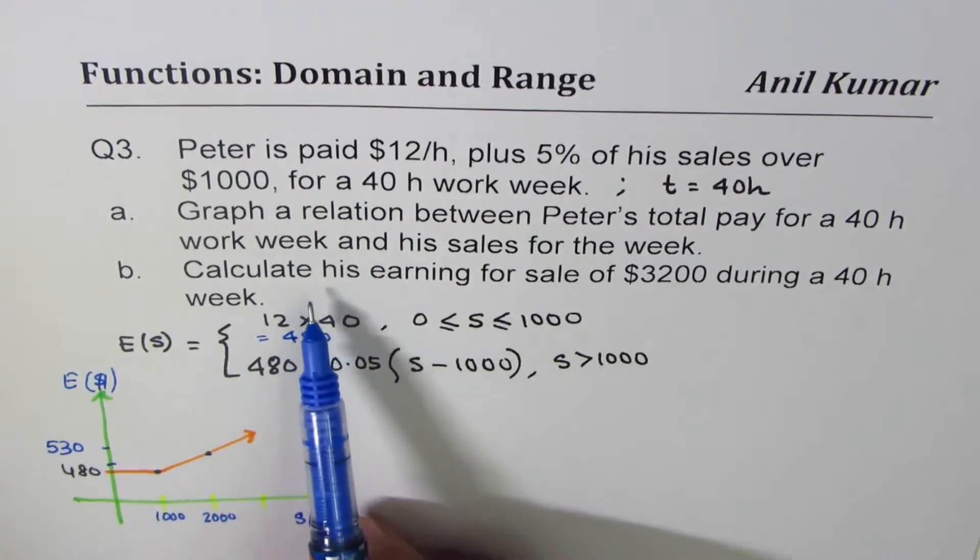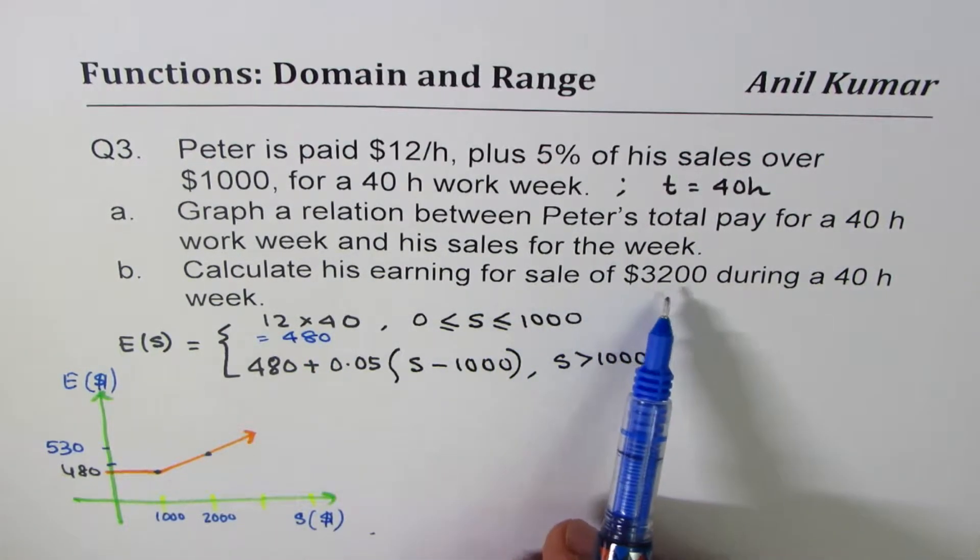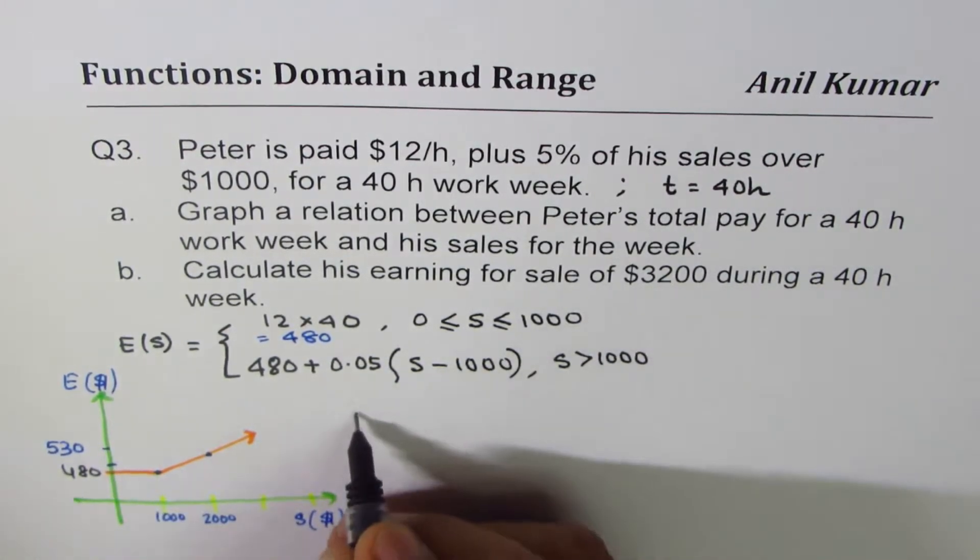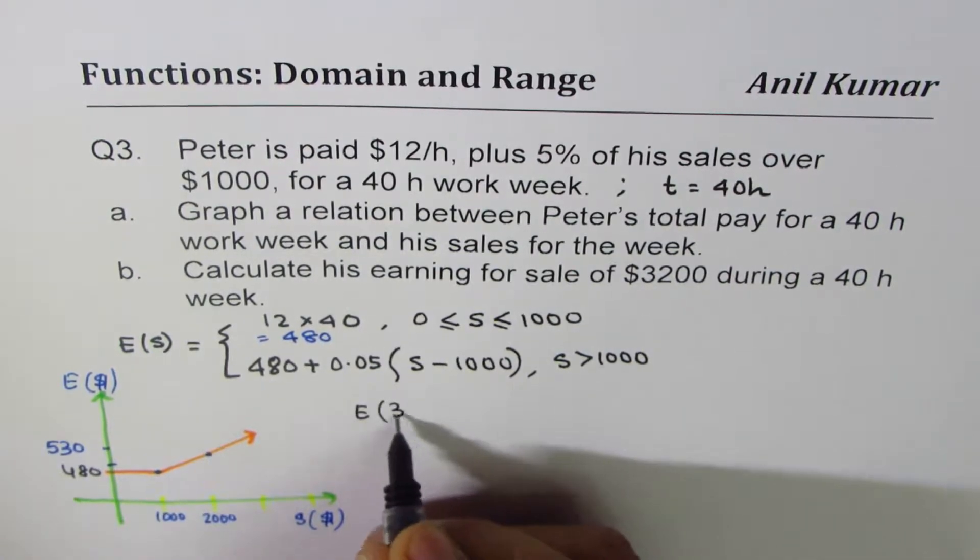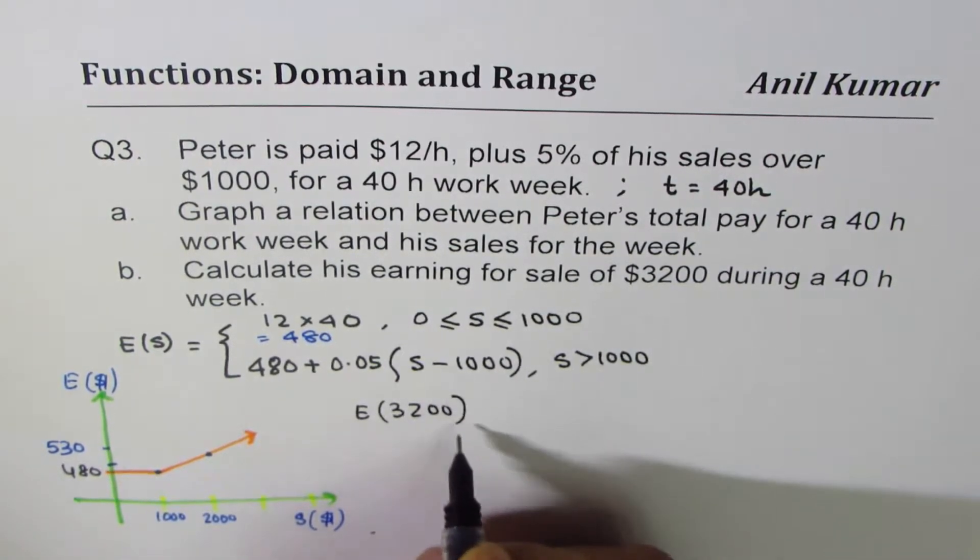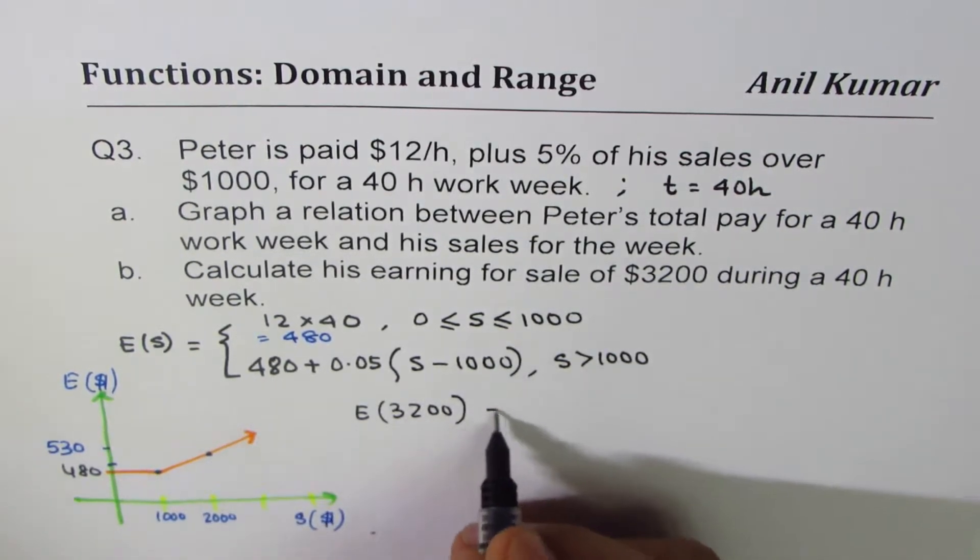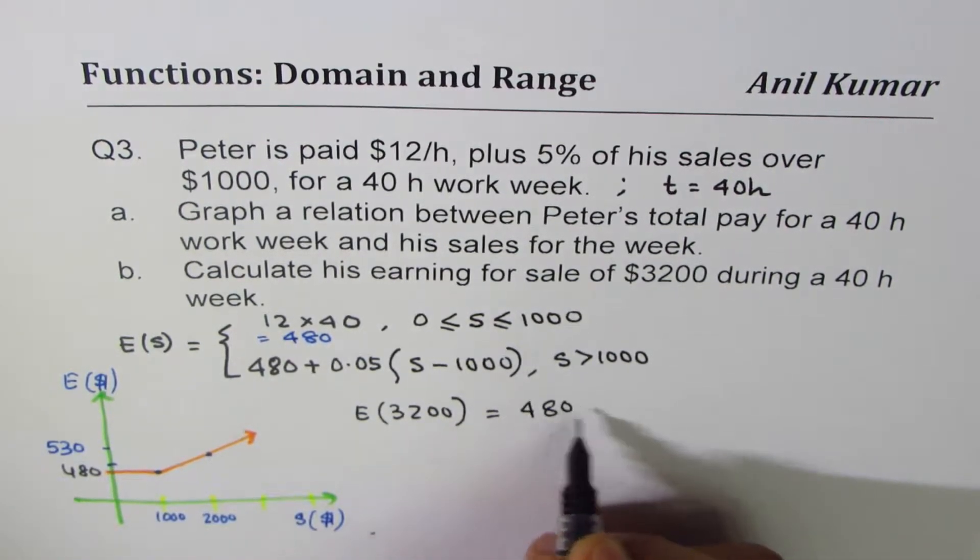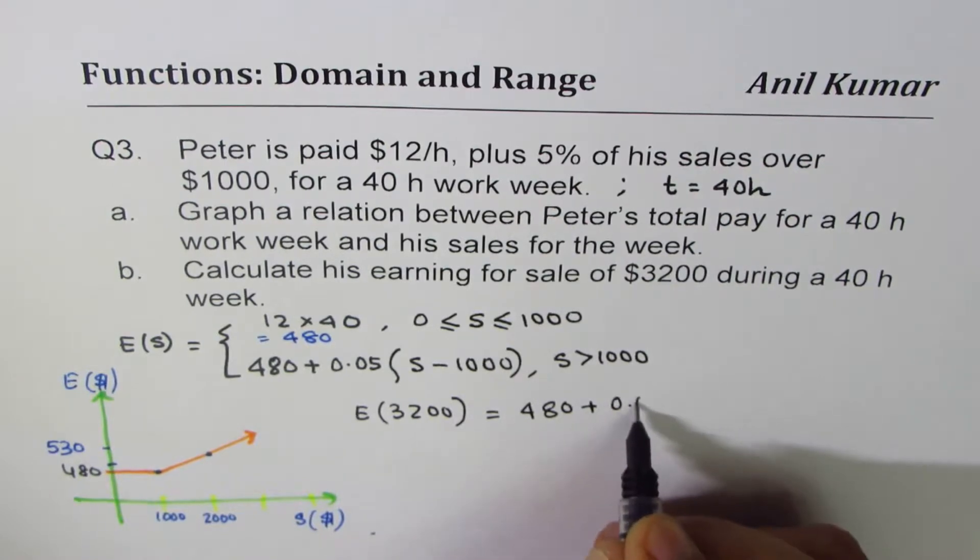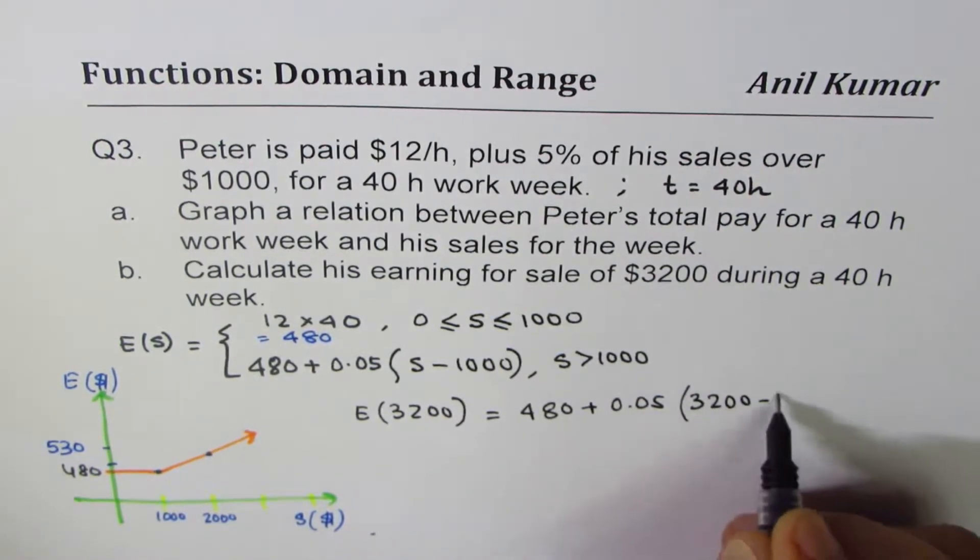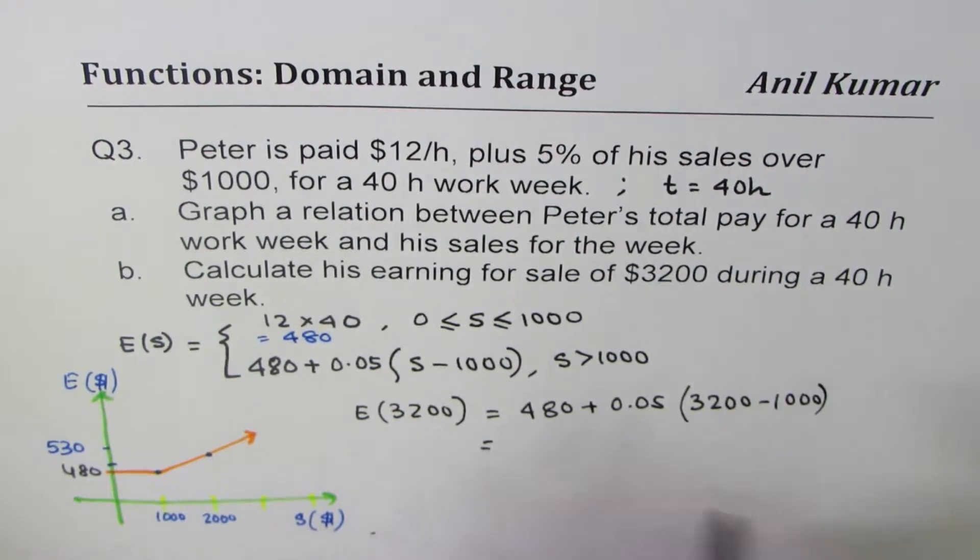Now the question is calculate his earnings for 3200. So we have E(3200). So 3200 is more than thousands, we'll have this equation. So we'll have 480 plus 0.05 times 3200 minus 1000 which is equal to...